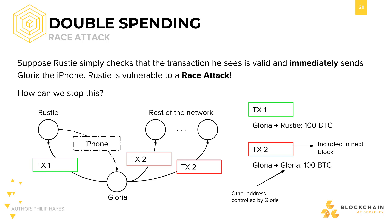I can trick him by sending him a valid transaction and send the rest of the network a conflicting transaction. While Rusty has the impression that I'm sending the UTXO to his own address, I tell the rest of the network that I want to send the same UTXO to a different address, which is actually another address that I control. I can incentivize miners to choose the second transaction by making the transaction fee higher for that one. It is possible then that Rusty sends me the iPhone, but I get to keep my money.